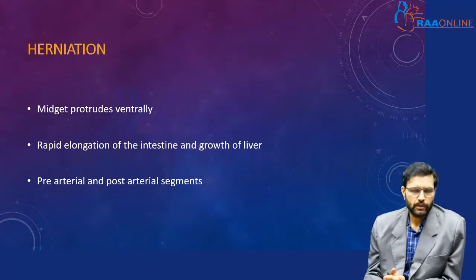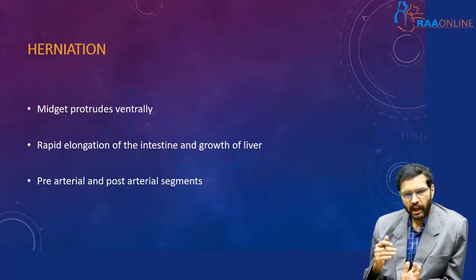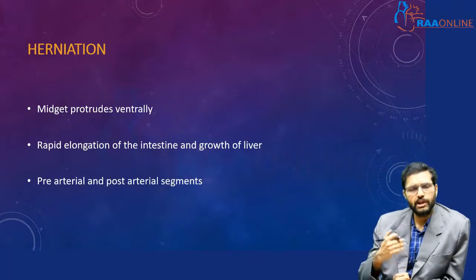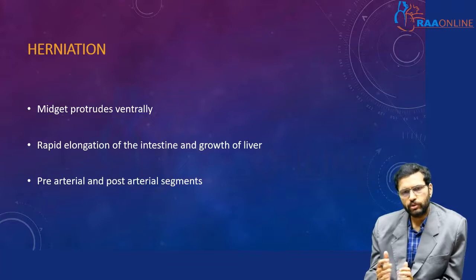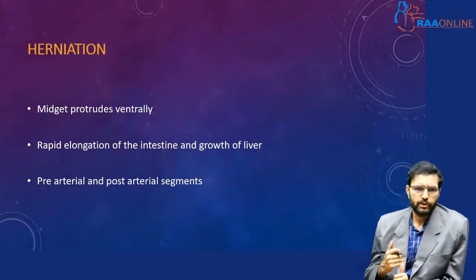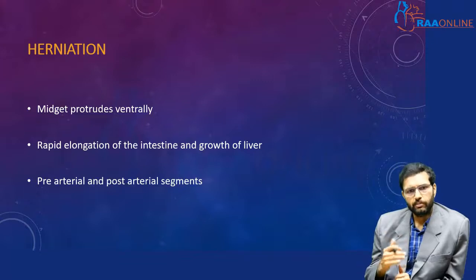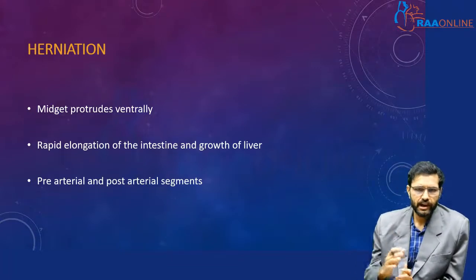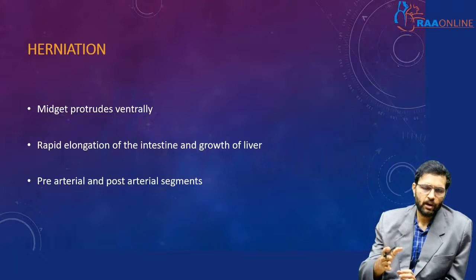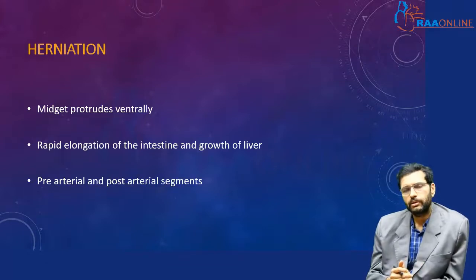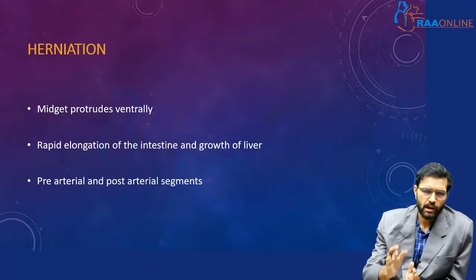The abdominal cavity in a developing fetus is extremely small and doesn't have enough space for the gut to elongate. To overcome this, there is a physiological herniation of the gut starting around four to six weeks and ending by the tenth week. The midgut protrudes ventrally and elongates, driven by both intestinal elongation and liver growth. The midgut herniates along with its blood supply, the superior mesenteric artery. Based on its relation to the superior mesenteric artery, the herniated bowel has two limbs: the pre-arterial limb and the post-arterial limb.